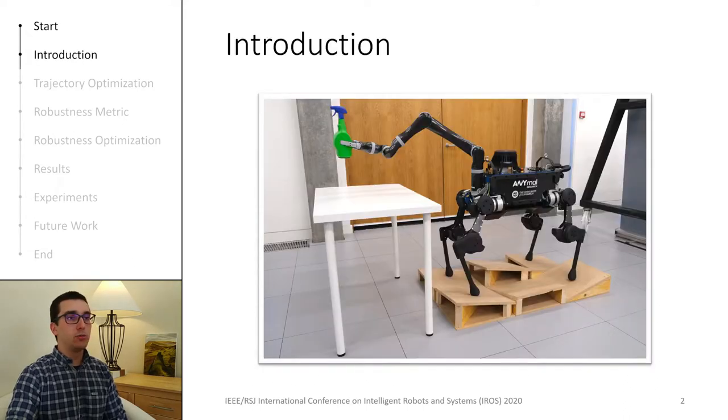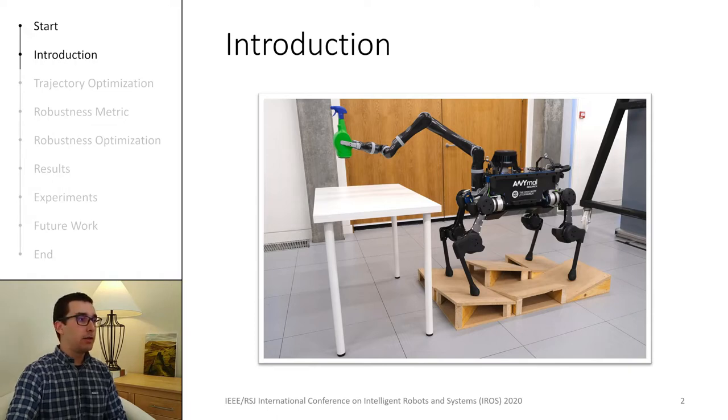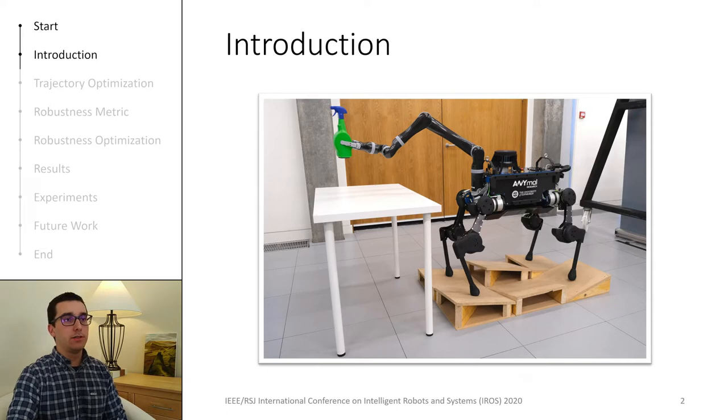Let's start by considering a legged robot with manipulation capabilities. In our lab, an example of such a platform is this quadruped robot, which has been equipped with an additional robot arm.